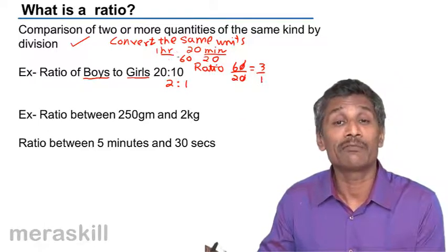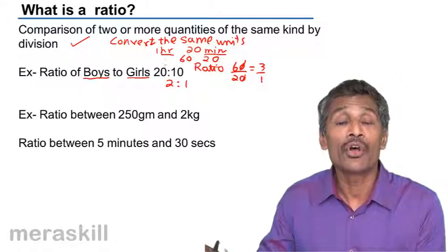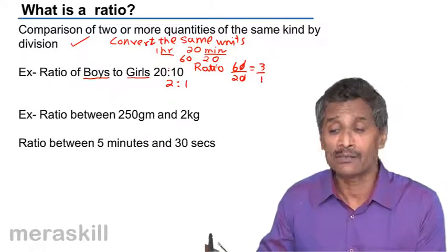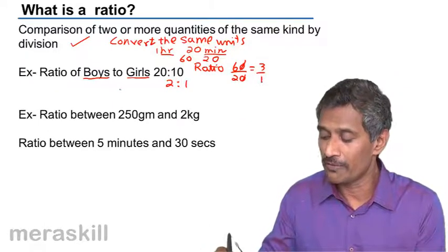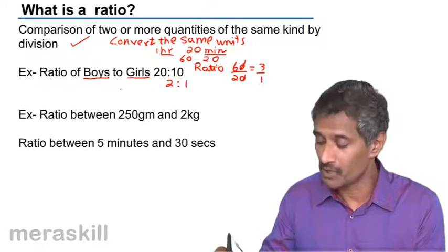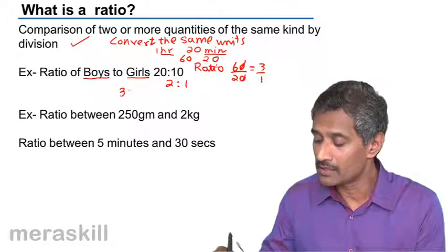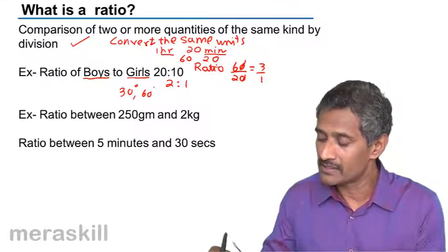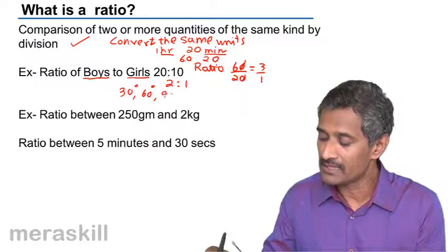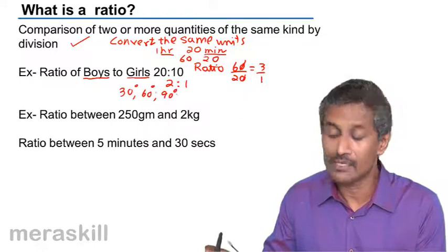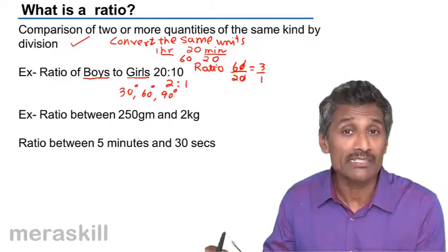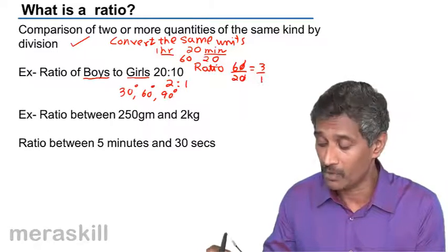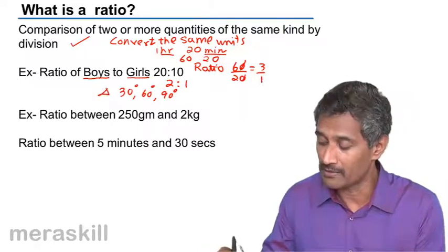For example, you can find the ratio of angles of a triangle. Suppose the angles of a triangle are 30 degrees, 60 degrees, and 90 degrees. So we have 3 quantities being compared.